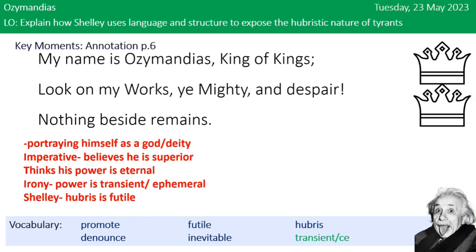Next quote: 'My name is Ozymandias, King of Kings. Look on my works, ye mighty, and despair. Nothing beside remains.' He's portraying himself as a god or deity when he says 'King of Kings.' He uses the imperative 'look on my works' because he believes he is superior, commanding everybody, even the mighty. He clearly thinks his power is eternal, which is ironic, because 'nothing beside remains.' His power was transient and ephemeral. Shelley, the poet, is pointing out that this kind of hubris — this arrogance — is pointless and futile.